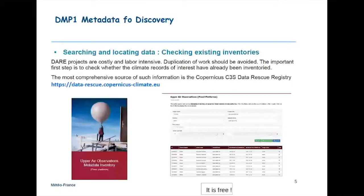CS3S was very motivated to create a global registry to catalog all the data recovered under several international projects. So now the most comprehensive source of such information is the Copernicus CS3S data rescue registry. You can have catalogues from upper air observation metadata inventories, for example. We participated in a project on upper air observations and all the data are inventorized and catalogued.